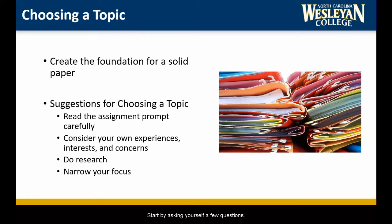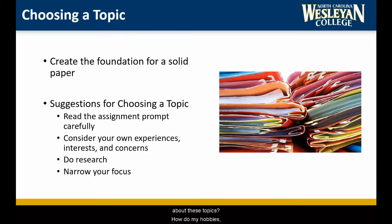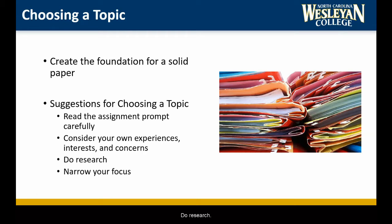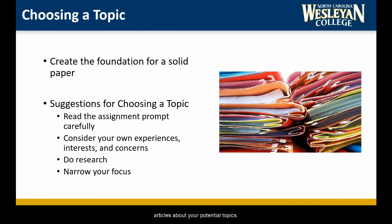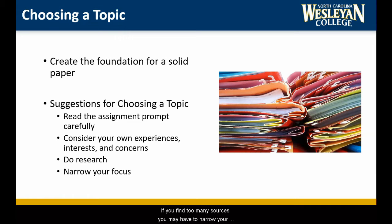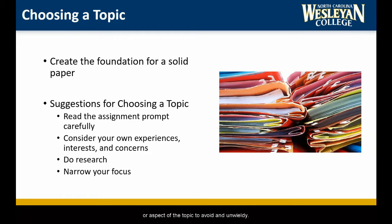Start by asking yourself a few questions: What topics in this field of study have really caught my attention this semester? What questions do I still have about these topics? How do my hobbies, experiences, and worries about the world connect to this field? Create a list and make notes about each. Once you have a few ideas, begin collecting books and articles about your potential topics. If you have difficulty finding sources, there might not have been enough research done for you to write an effective literature review. If you find too many sources, you may have to narrow your topic to a specific time period, publication, author, or researcher, or aspect of the topic to avoid an unwieldy project.